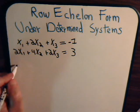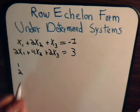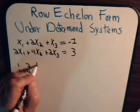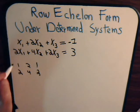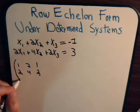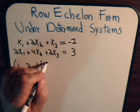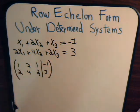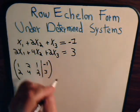The augmented matrix would be: 1, 2, 2, 4 in the first row, and 1, 2, minus 1, 3 in the second row. Now we want to make the leading entry of the second row into a 0.